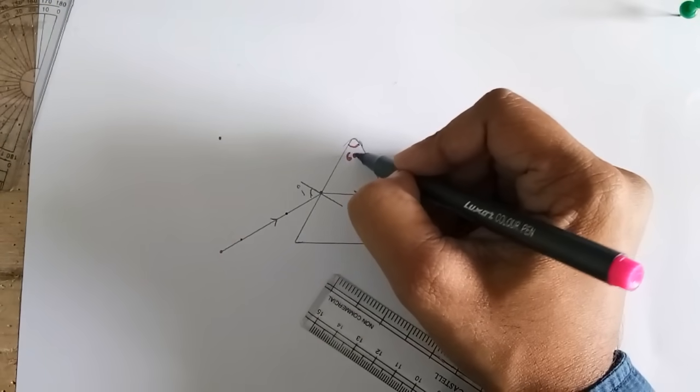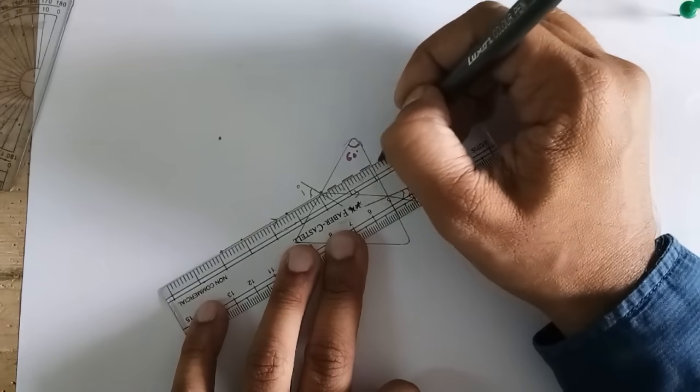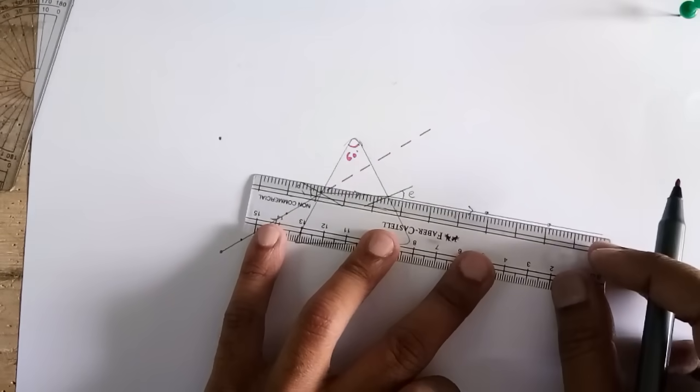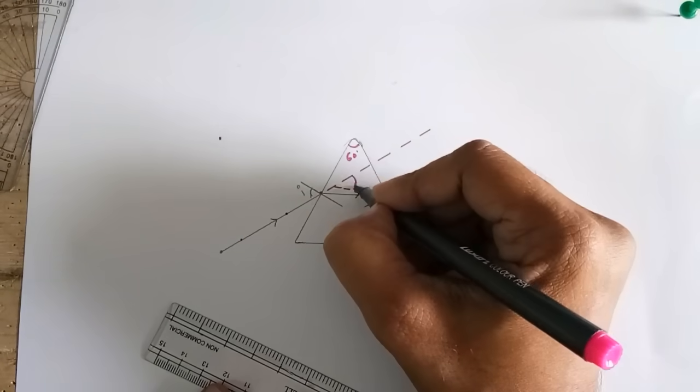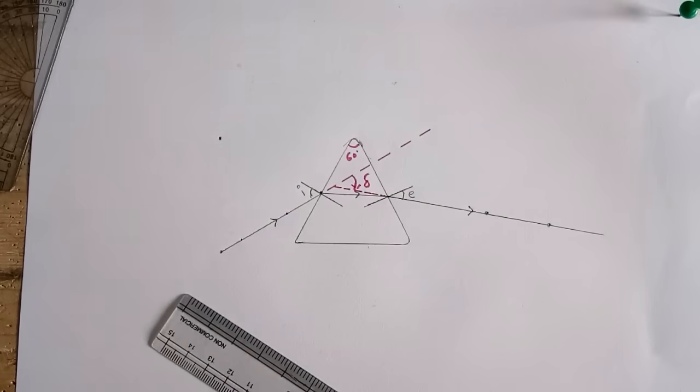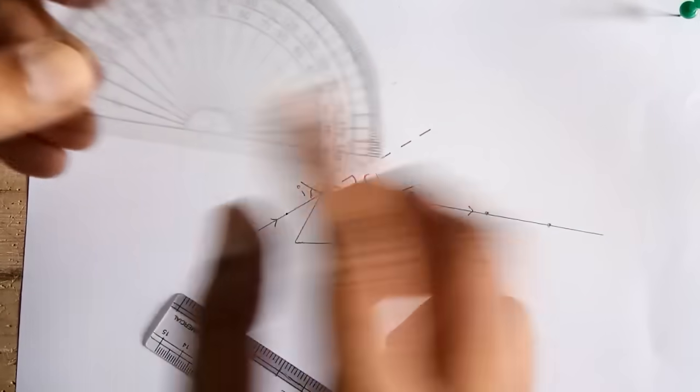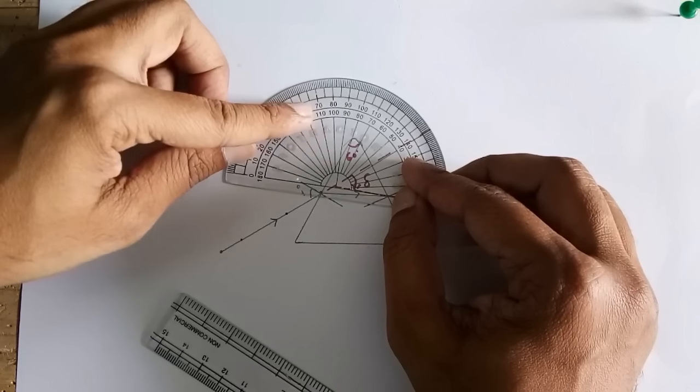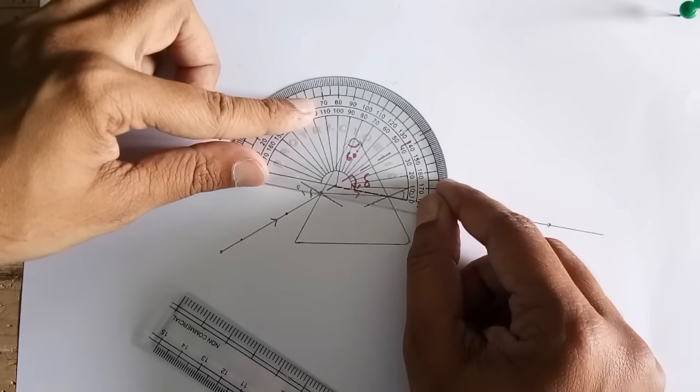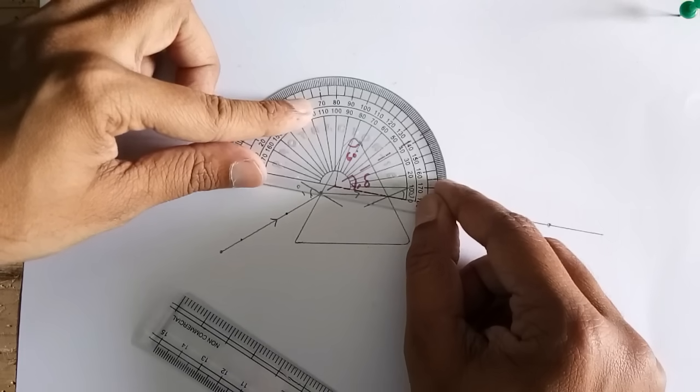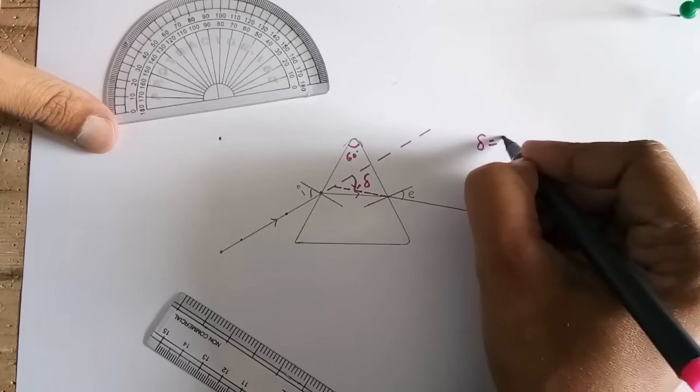We know that this angle is 60 degree, the angle of prism. Now I am going to extend the incident ray forward and I am going to extend the emergent ray backwards. So I get this angle that is called angle of deviation. Let us measure with the help of a protractor. Make sure that this point is falling over here, so like this. And the angle of deviation, this line matching with this line. And the angle of deviation is just over 40 degrees, it is approximately 42 degrees. So the angle of deviation for the prism is 42 degrees.